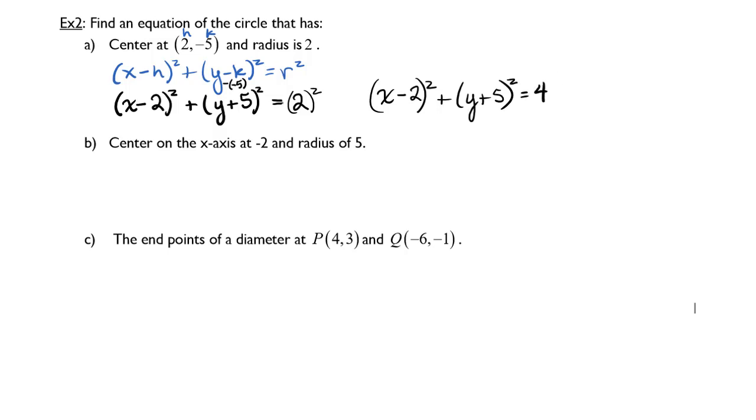Now let's look at a center on the x-axis at negative 2 and radius of 5. It might be helpful if this sounds a little strange. If you draw a little sketch of what this might look like, we know the radius is 5, so r equals 5.